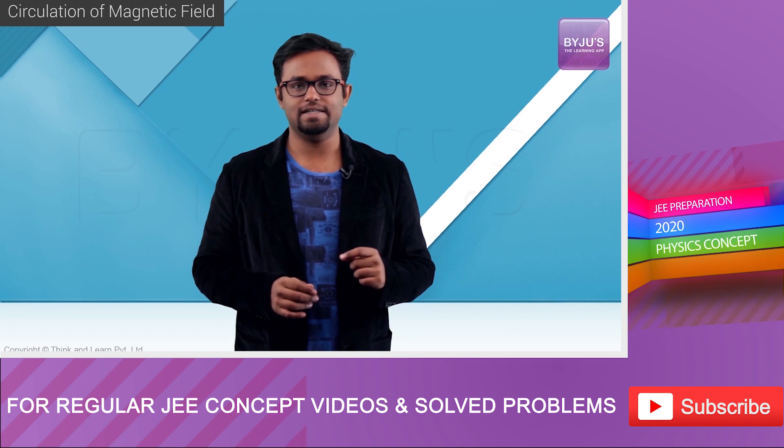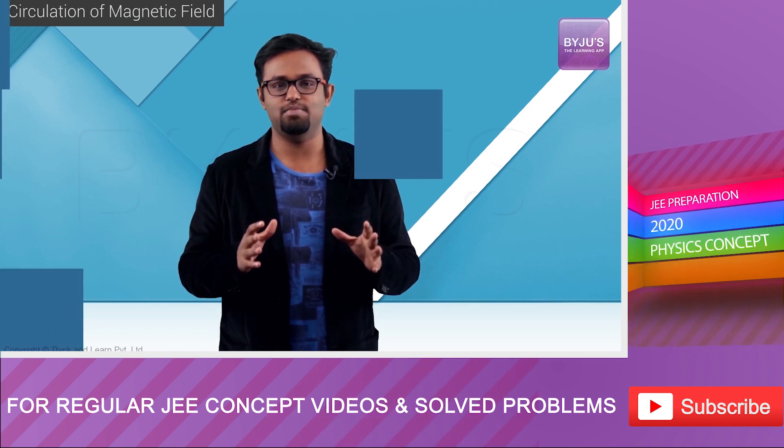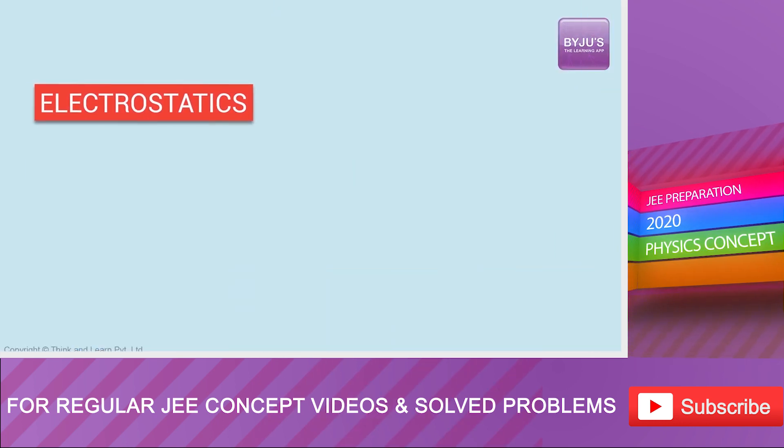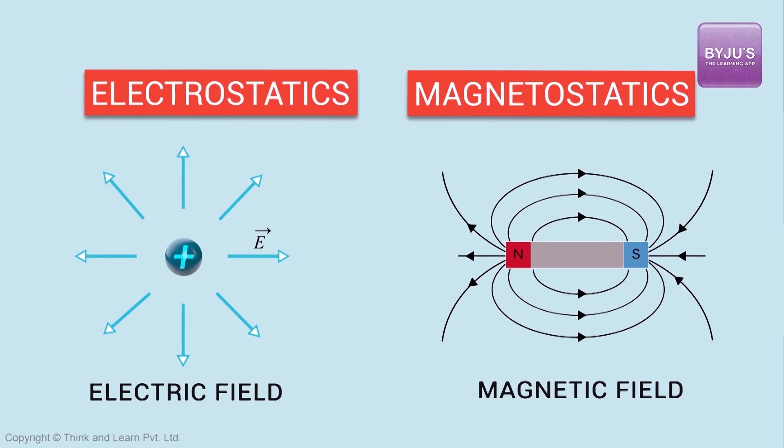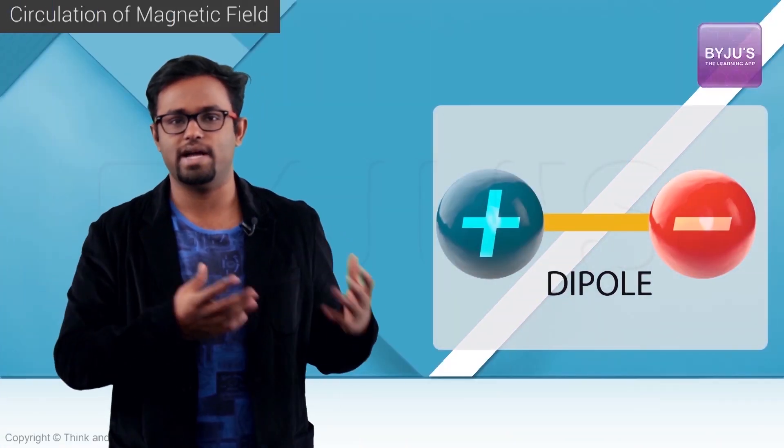One thing you must be observing is that there are some similarities between our study of electrostatics and what we're doing here in magnetism. In electrostatics there was electric field, and now we have magnetic field. In electrostatics we spoke about electric dipoles, here we have magnetic dipoles. There are many similarities between the two subjects.